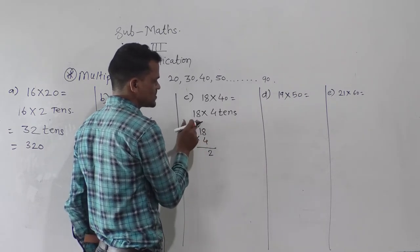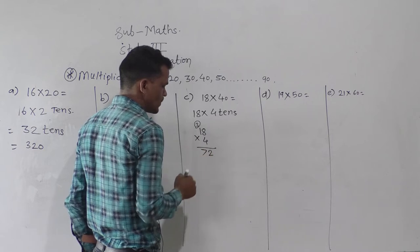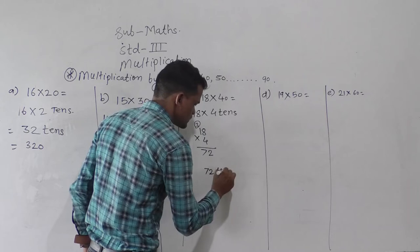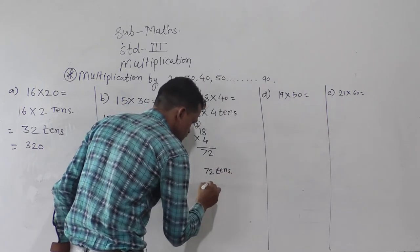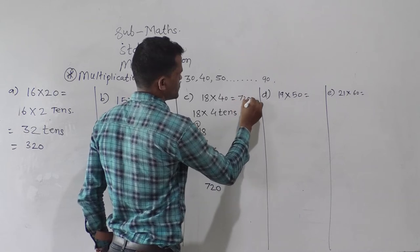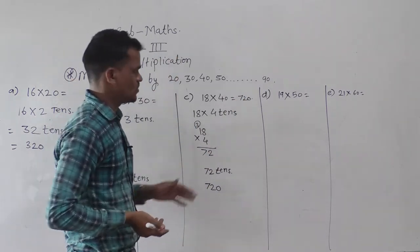4 ones are 4, 4 plus 3, 7. So here 72 tens. Now 72 tens means 720 is the answer. By using this trick you can solve.